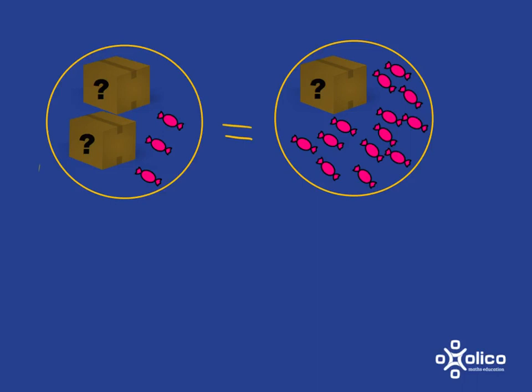We can represent this situation by an equation. If we think of x as being the number of sweets in the box, then what we have is x sweets and another x sweets here. So x and x is 2x plus 3 spare sweets.